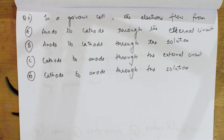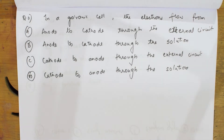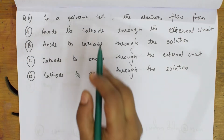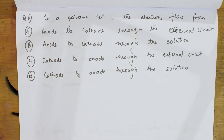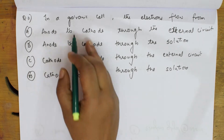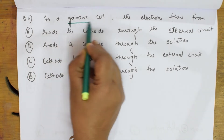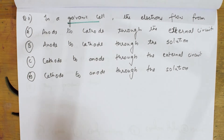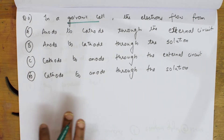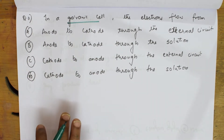Let us see this question. This is basically an electrochemistry chapter question. So solutions we have done. Now let us see this electrochemistry question. What do they give us? In a galvanic cell, the electrons flow from. They are the simplest question. So they have given here one option: galvanic cell. Basically, in a galvanic cell, from where do the electrons flow?